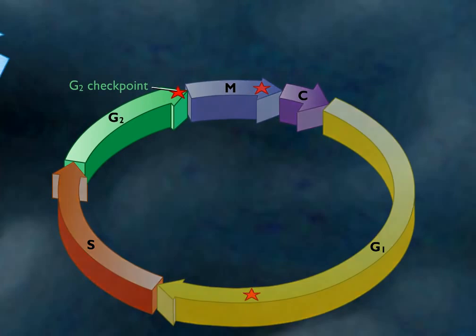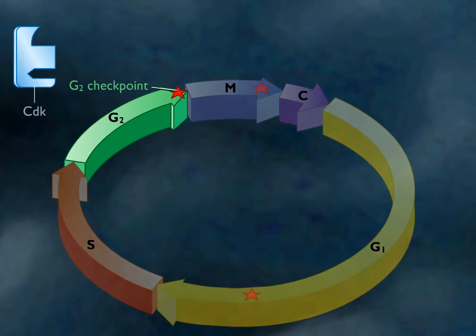At the G2 checkpoint, cyclin-dependent kinases, CDKs, phosphorylate histones and proteins that carry the cycle past the checkpoint into mitosis.